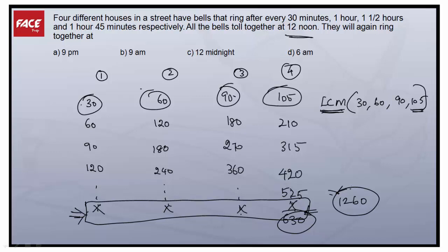1260 goes with 90. 1260 goes with 60. And 1260 goes with 30. So 1260 will be the least common multiple of 30, 60, 90, and 105.